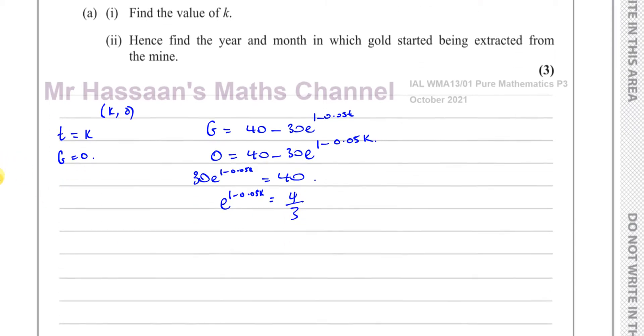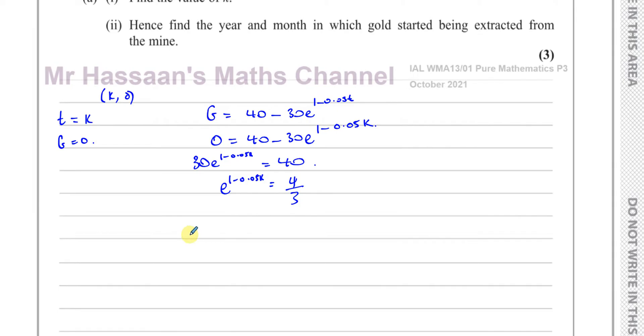And then I can solve this by taking the ln of both sides. I can say, if I take the ln of this side, I'm left with 1 minus 0.05k equals the ln of 4 over 3. And then I can just rearrange this: 1 minus the ln of 4 over 3 equals 0.05k. And then I can divide everything by 0.05 to leave me with k. So I have 1 minus the ln of 4 over 3 divided by 0.05, and that will give me my value of k.